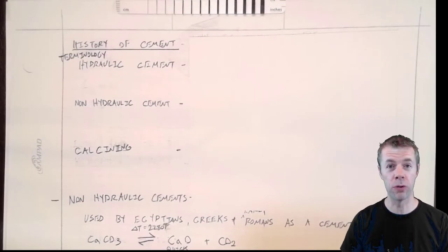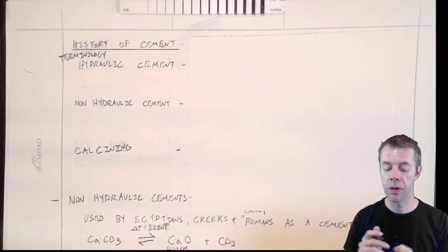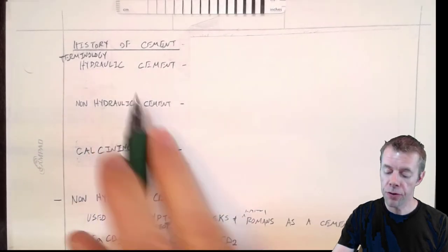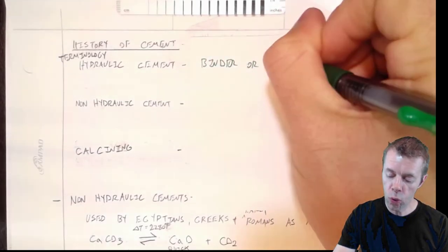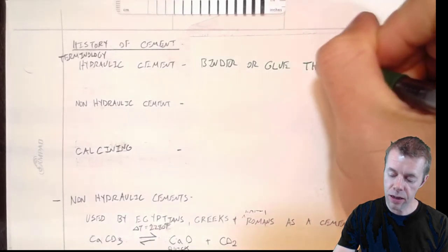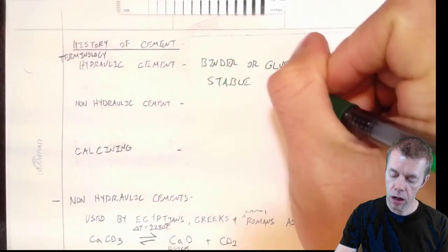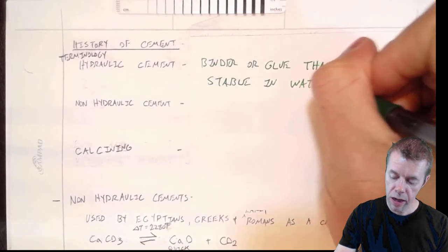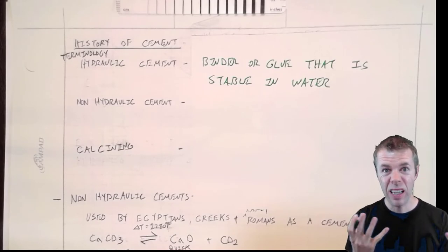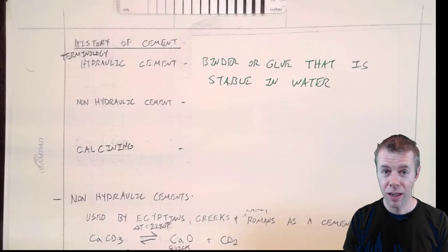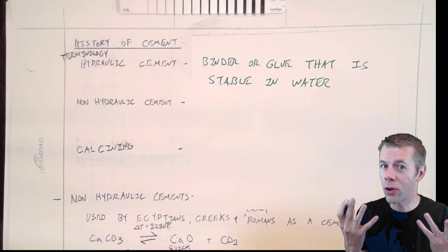The history of cement. First and foremost, we need to start out with some terminology. That's the way we make sure we're all on the same page. First, we're going to talk about a hydraulic cement. That is a binder or glue that is stable in water. And that's the type of cement you want, one that's stable in water. Because if it's not stable, once it rains, it falls apart. That's not good. So, if a hydraulic cement is stable in water, what do you think a non-hydraulic cement is?